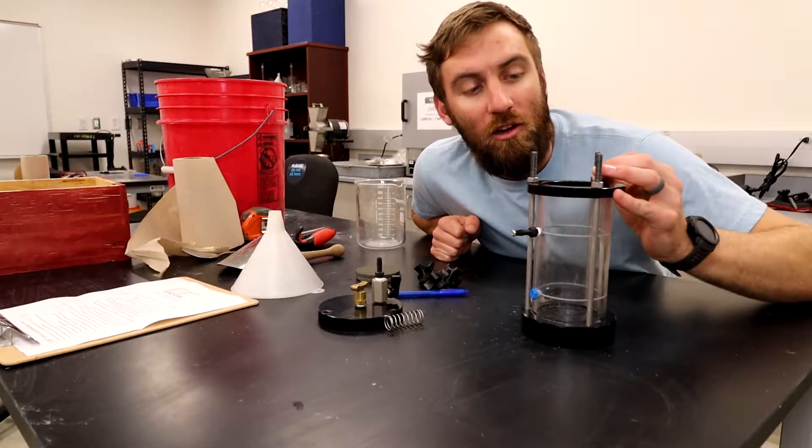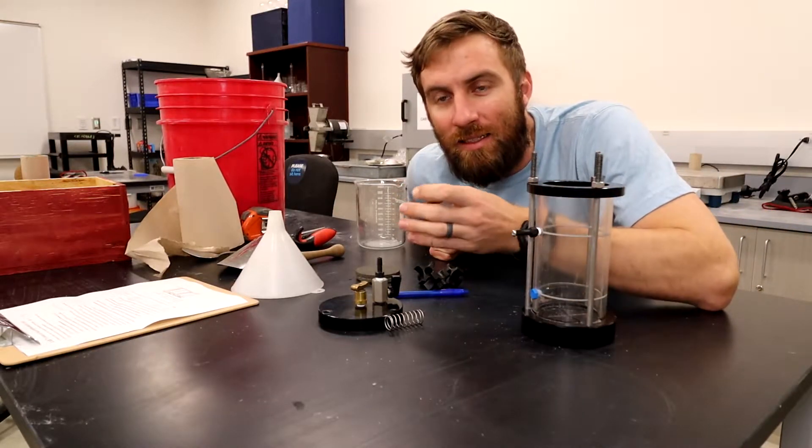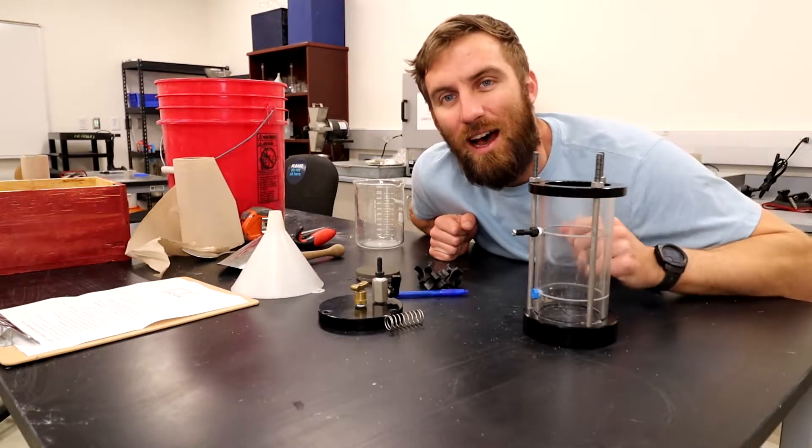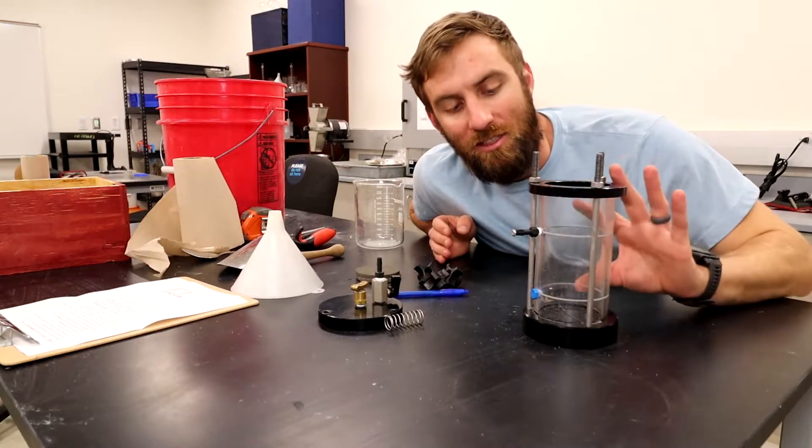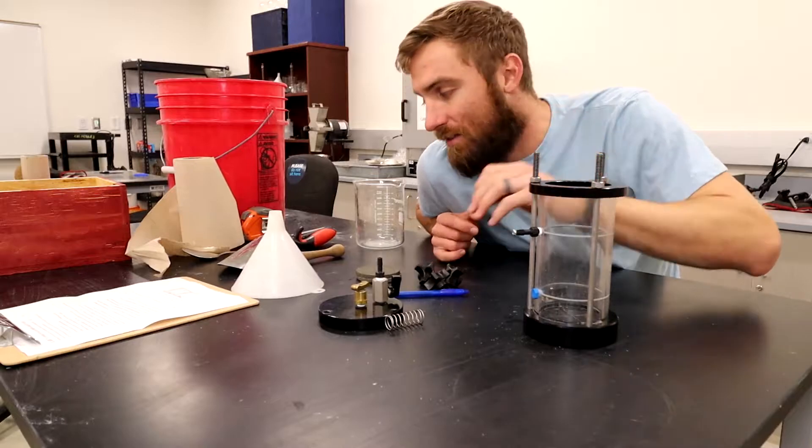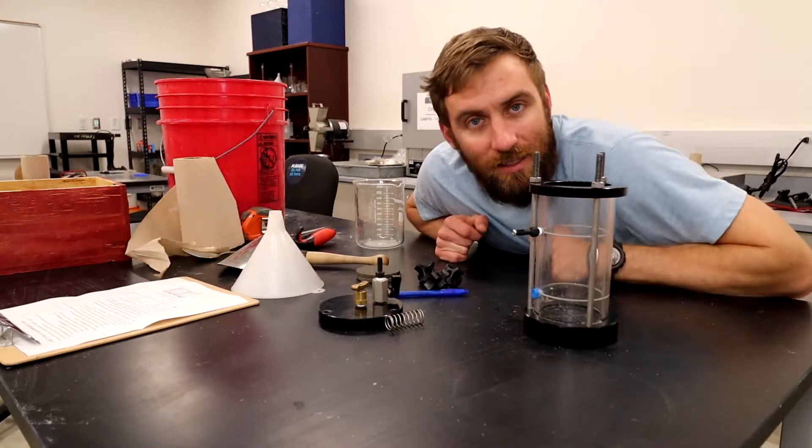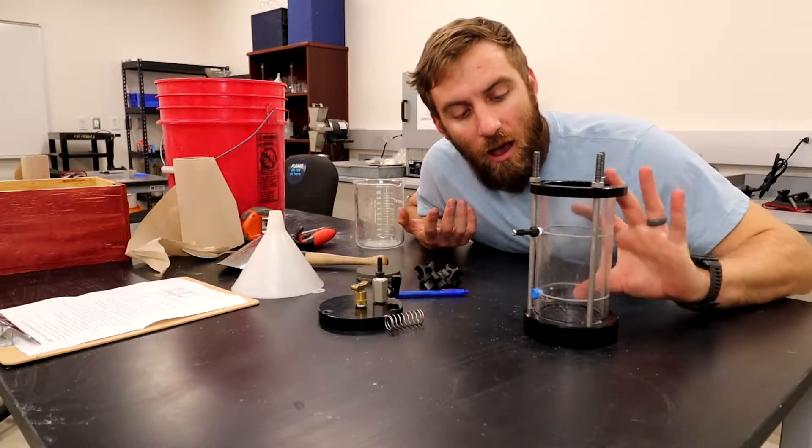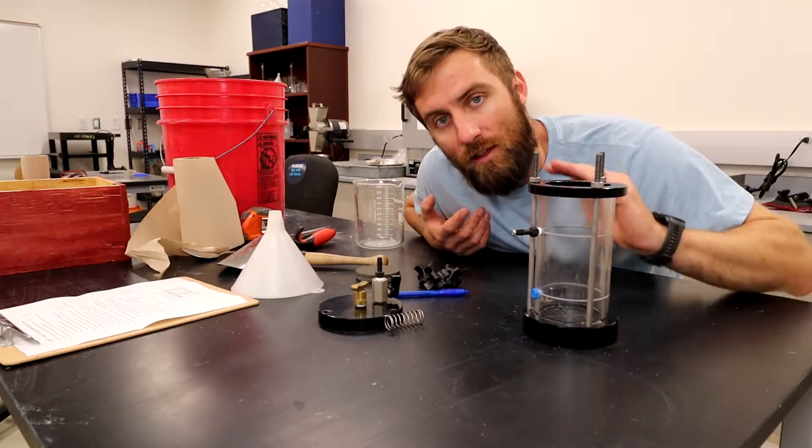Now we need to fill our permeameter with our soil. We're going to be doing this in three layers. It doesn't need to be exact, but we want to make sure it's consistent. We're going to fill it to roughly about the top - it says 650 grams. You don't really need to know the exact amount, but that's a good estimate to make sure it's filled up. Between each layer, we're going to use our tamping tool to compact it and increase the density just a little bit. Then we'll take our dimensions of our inside diameter and the height, which is the length of the soil specimen.